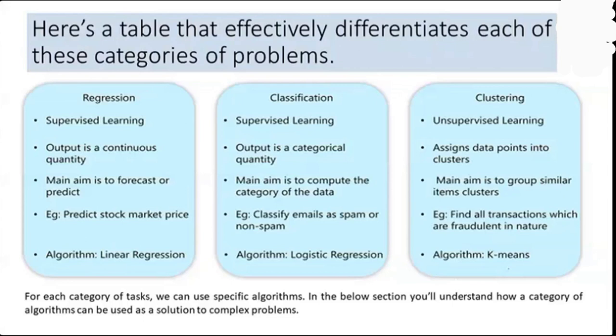In case of regression, the main aim of the algorithm is to forecast, predict something, or provide a futuristic decision. In case of classification, the aim is to compute the category of the data. The main aim of the classification algorithm is categorization of the data. In case of clustering, it groups similar items together, and those grouped items are called a cluster.